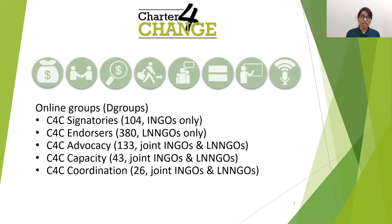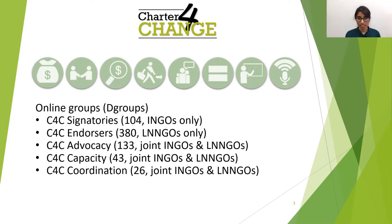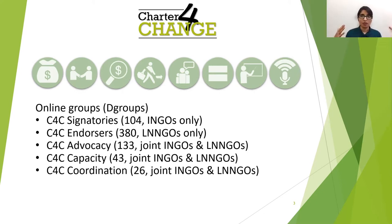We use the dGroups platform for all our online work. All our online groups are based on the platform and we have two main groups: one for the international INGOs — the signatory members — who are all in the CPC signatories dGroup, and on the other hand, we have all our local and national NGO members in the CPC endorsers dGroup. Other than these two main groups, we have thematic groups as well as one steering group — the Charter for Change coordination group — which steers the whole network.